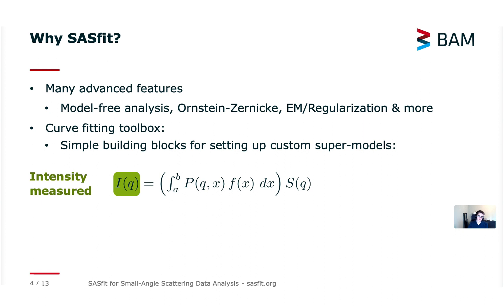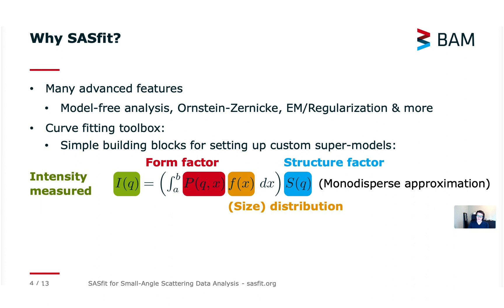So it consists often of an integral for the polydispersity as shown here in parentheses and the form factor which is indicated by a capital P here. The size distribution or parameter distribution is the lower F highlighted in orange. The structure factor indicated with a capital S and in blue and in this way incorporating a structure factor is called a monodisperse approximation. That's the simplest way.